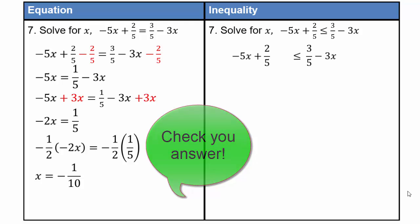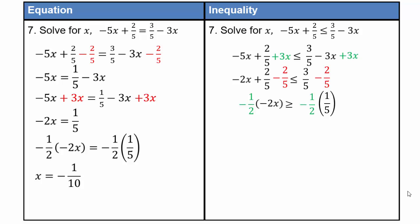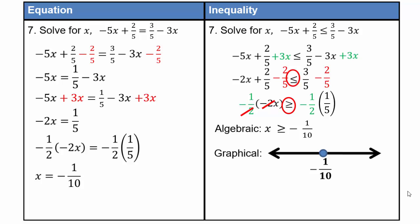You can do the same for inequalities with the exact same steps. Here I'm choosing to add three x, then I have negative two x plus two-fifths is less than or equal to three-fifths. Subtract two-fifths. Then multiply by negative one-half, or divide both sides by negative two — which means you change the sign to greater than or equal to. So x is greater than or equal to negative one-tenth. Graphically, negative one-tenth is plotted, included, shaded to the right. Interval notation: negative one-tenth with a square bracket all the way to infinity with a parenthesis.